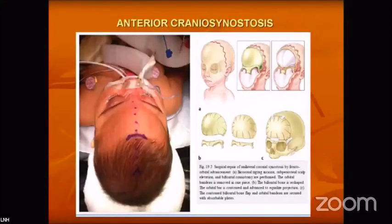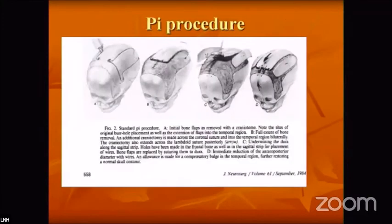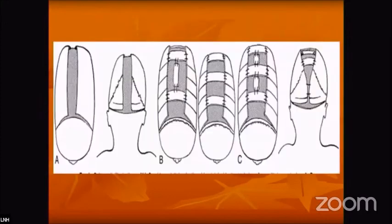These pictures show frontal advancement procedures including barrel stave osteotomy. Many surgeons use different names but the goal is the same: craniofacial advancement. The PIE procedure is one example. McComb's approach for sagittal synostosis involves occipital reduction, biparietal widening, reduction of the occipital protuberance, widening of the biparietal diameter, and lowering the vertex height.